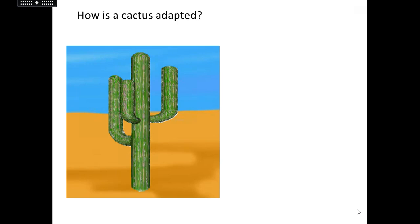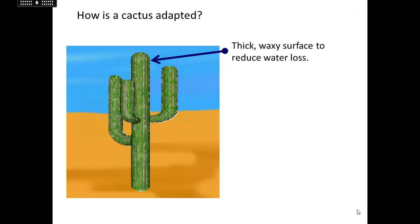The cactus also lives where the camel lives, so it too needs to reduce water loss. It does that by having a waxy layer on the outside. As with the greasy layer on the polar bear's fur, that waxy layer repels water, meaning nothing is going to be lost from the inside of the cactus. But the cactus is also able to get water into itself really effectively in a different way, which we'll talk about in a minute.